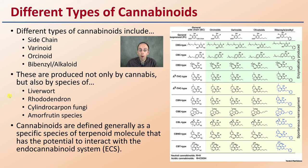Cannabinoids are defined generally as specific species of terpenoids — molecules that have the potential to interact with the endocannabinoid system, typically abbreviated ECS.